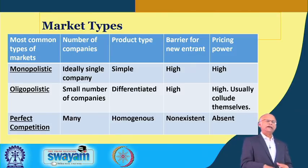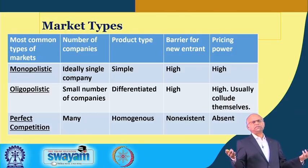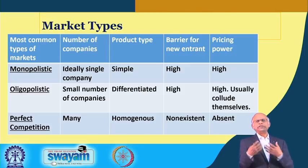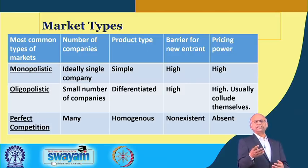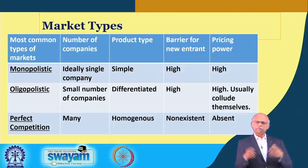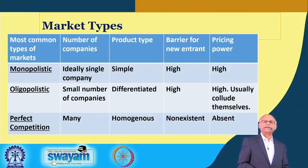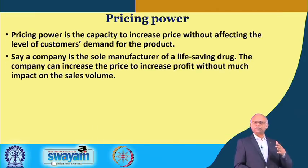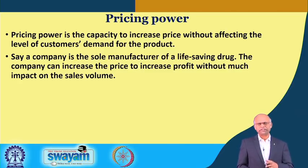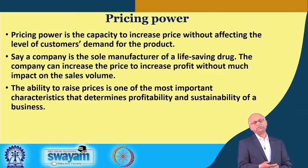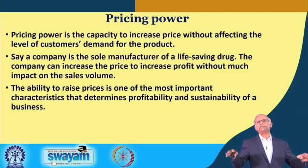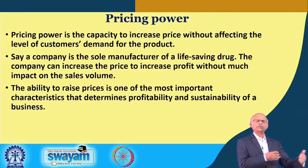Perfect competition is where there are many companies and no product differentiation — everybody sells an almost similar product, and there is not much switching cost for the customer. Out of these three, monopolistic companies are price givers — they dictate the price. Oligopolists also dictate the price. In perfect competition, businesses cannot dictate price; if somebody increases the price, customers will switch to another product. Profit margins are very low in perfect competition, whereas monopolists have huge profit because they always have pricing power — the capacity to increase price without affecting the level of customer demand.